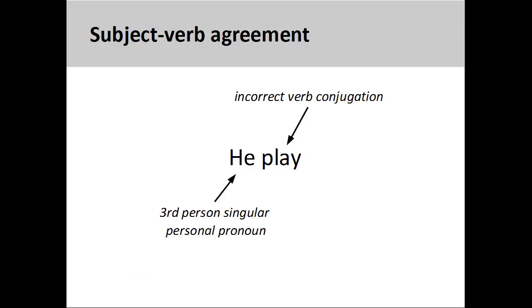When conjugating verbs, it is important to maintain agreement between the subject and the verb. That is to say, the verb must agree with the subject both in number and person.